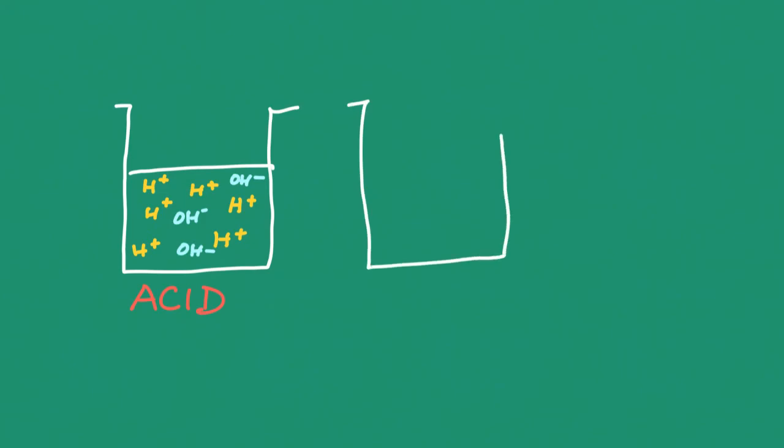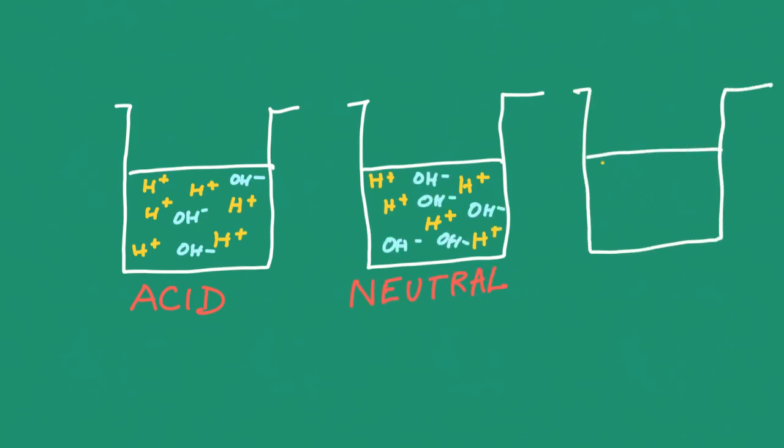Let's compare an acidic, basic, and neutral solution. If a solution is acidic, we expect it to have more hydrogen ions. In this beaker, you can see that there are many more hydrogen ions than hydroxide ions. In the next beaker, we have a neutral solution, so we should expect to see the same number of hydrogen ions and hydroxide ions. The third beaker has a basic solution, and we would expect to see more hydroxide ions than hydrogen ions.